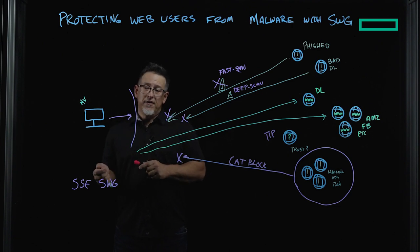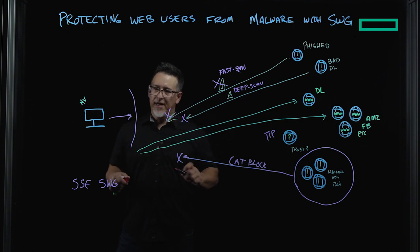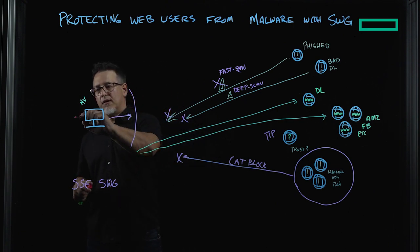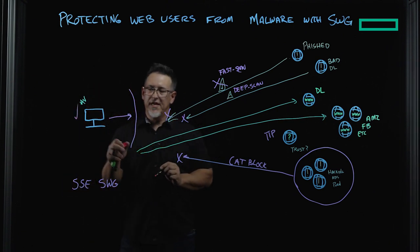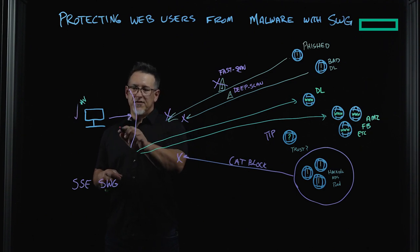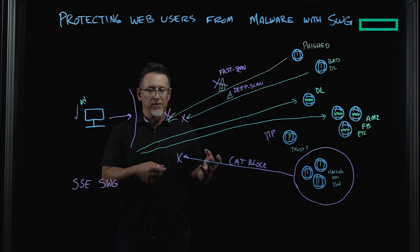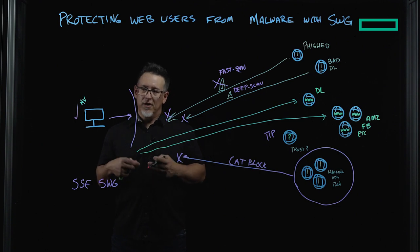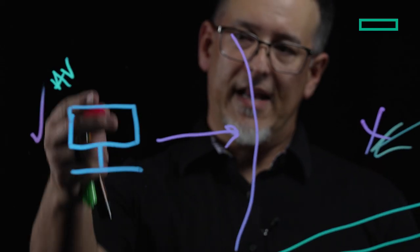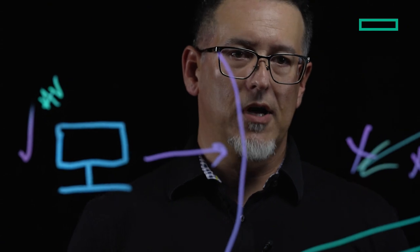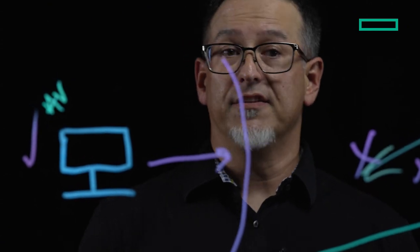Now, a side benefit to using SSE SWG is that we can check on the posture of this endpoint. Because the SSE SWG becomes the user's only path to the web, a business can now control and verify that AV and firewall and other kinds of tools are enabled for true defense in depth.